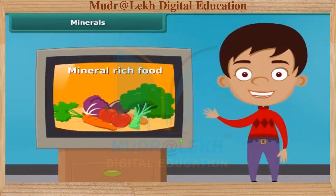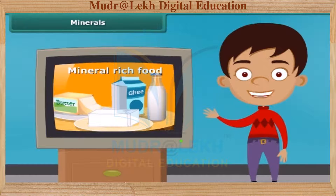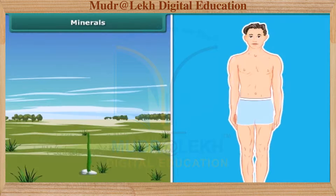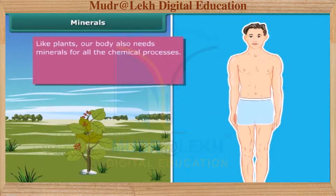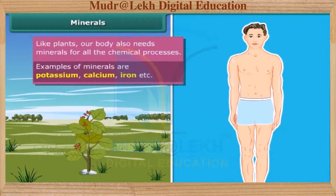You might have seen many advertisements of mineral-rich food items. Now let's know why they are so important. Actually, plants need minerals for growth. Besides this, a body also requires minerals in small quantities for all the chemical processes. Potassium, calcium, iron, etc. are some common examples of these minerals. Let us know more about the sources and the role of these minerals using the next table.